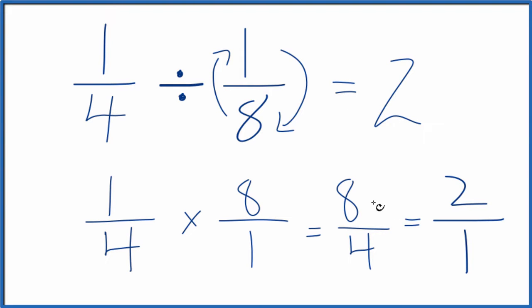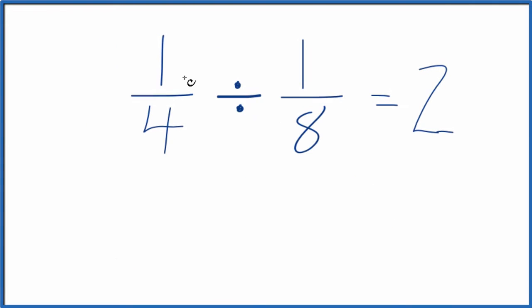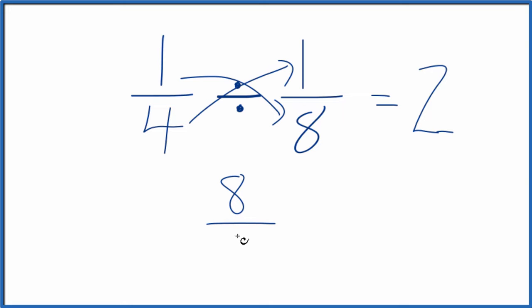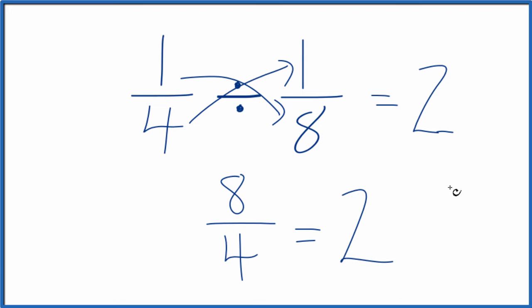There is another way we could do this. We could multiply 1 times 8, that would give us 8, and 4 times 1, that gives us 4, which is what we got before, and we know that that is 2. Same thing we got earlier.